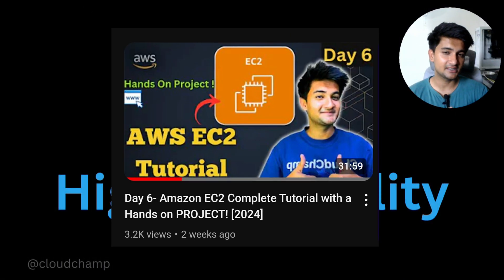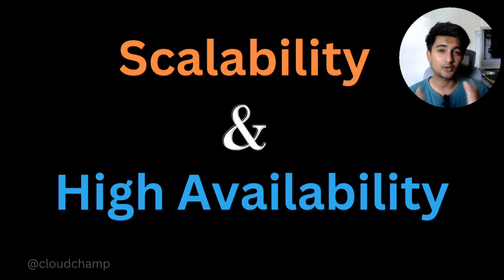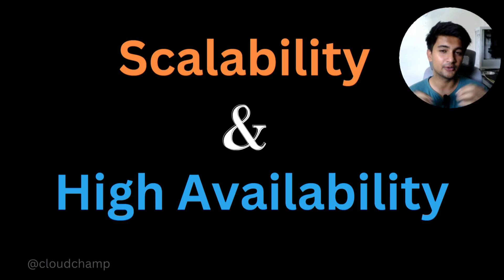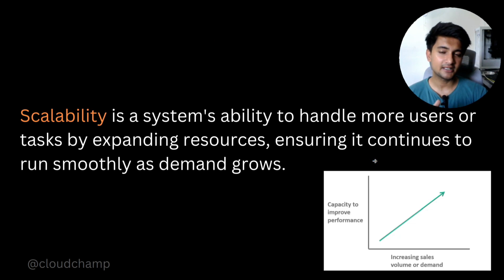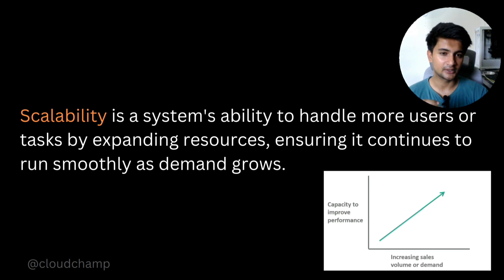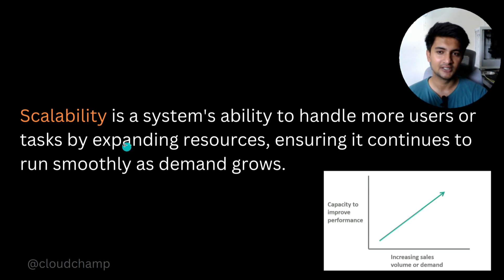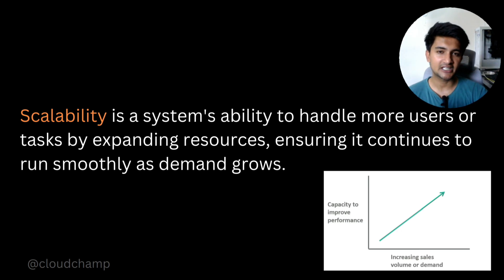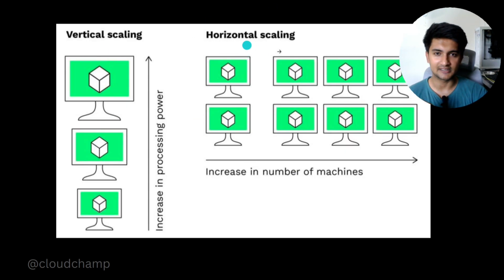In the previous video we created only one EC2 instance. What if you have more customers coming to your website and you want to increase the size of your instance? You can do it using scalability. Scalability is a system's ability to handle more users or tasks by expanding resources like CPU and RAM of your server, ensuring it continues to run smoothly as demand grows. Scalability is of two types: vertical scaling and horizontal scaling.